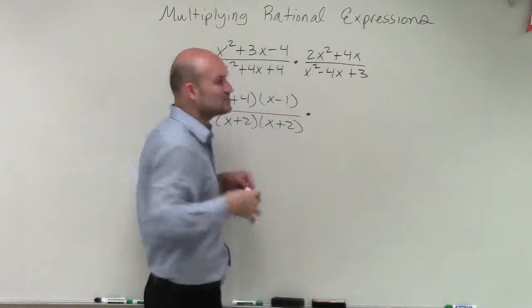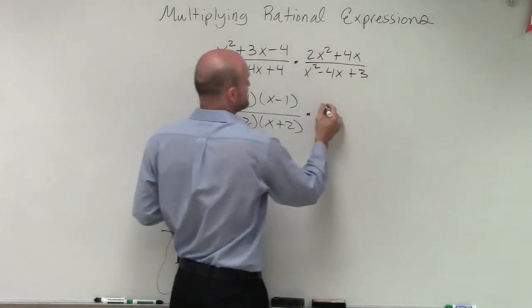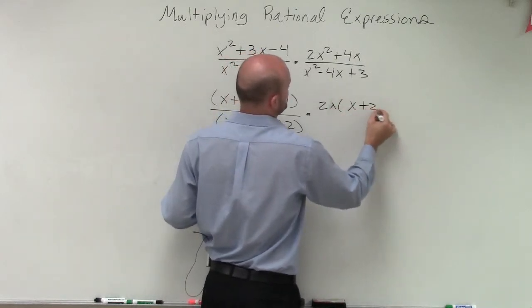Here, I have a binomial, which is a nice little break, because I know I can just factor out the GCF, which is a 2x. So when I factor out a 2x, I'm left with an x plus 2.